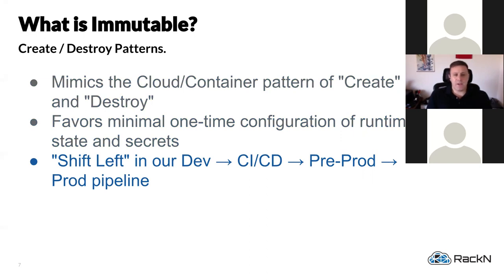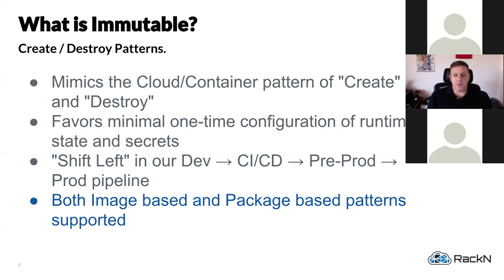This basically means it shifts to the left. If you look at a dev, CI/CD, pre-production, prod pipeline — a standard pipeline in most production environments — this pattern means we shift configuration, update, and patching from the production side and do that more in dev and CI/CD. We create a snapshot or polaroid picture of what our system should look like and roll that out, instead of creating a production system and then continuously patching it.